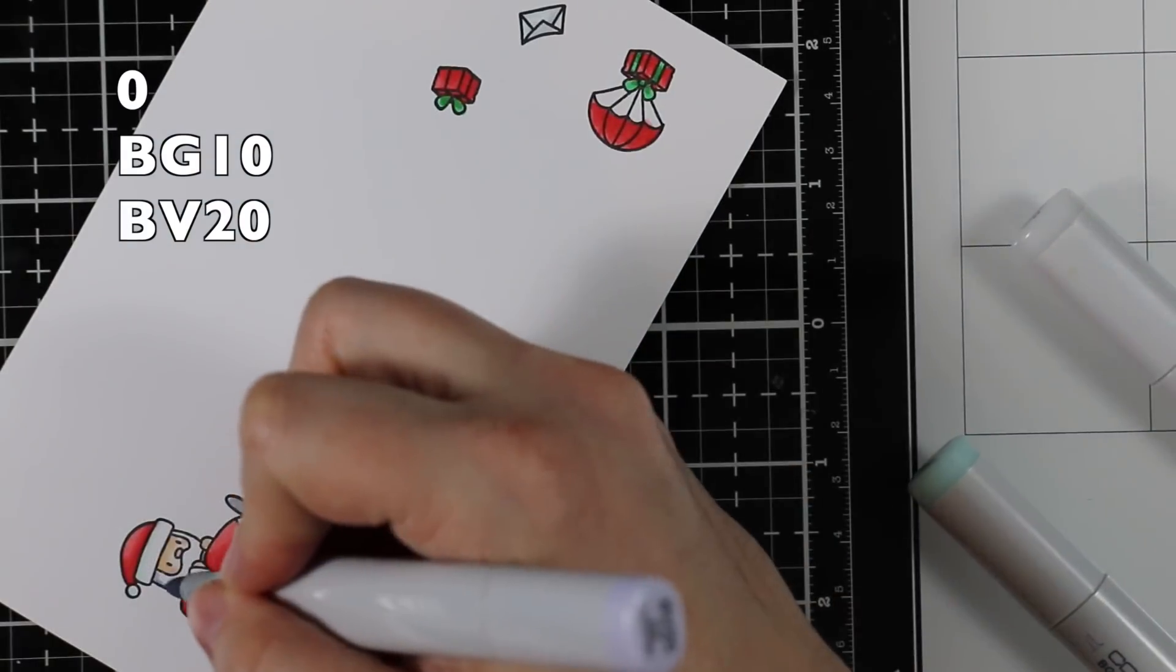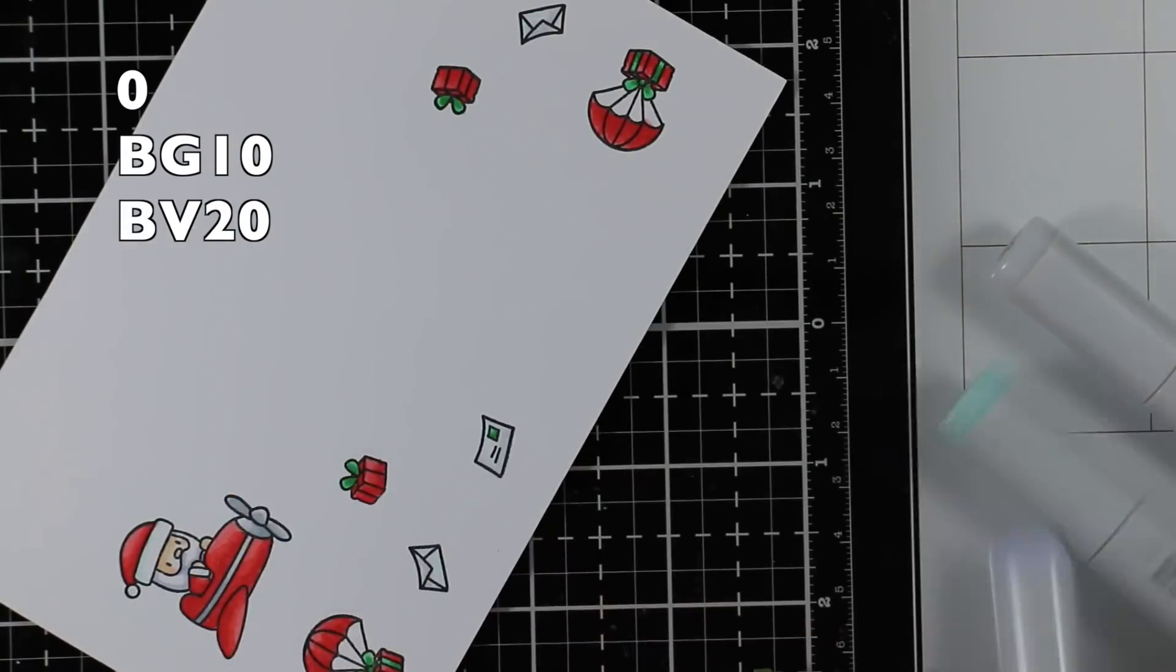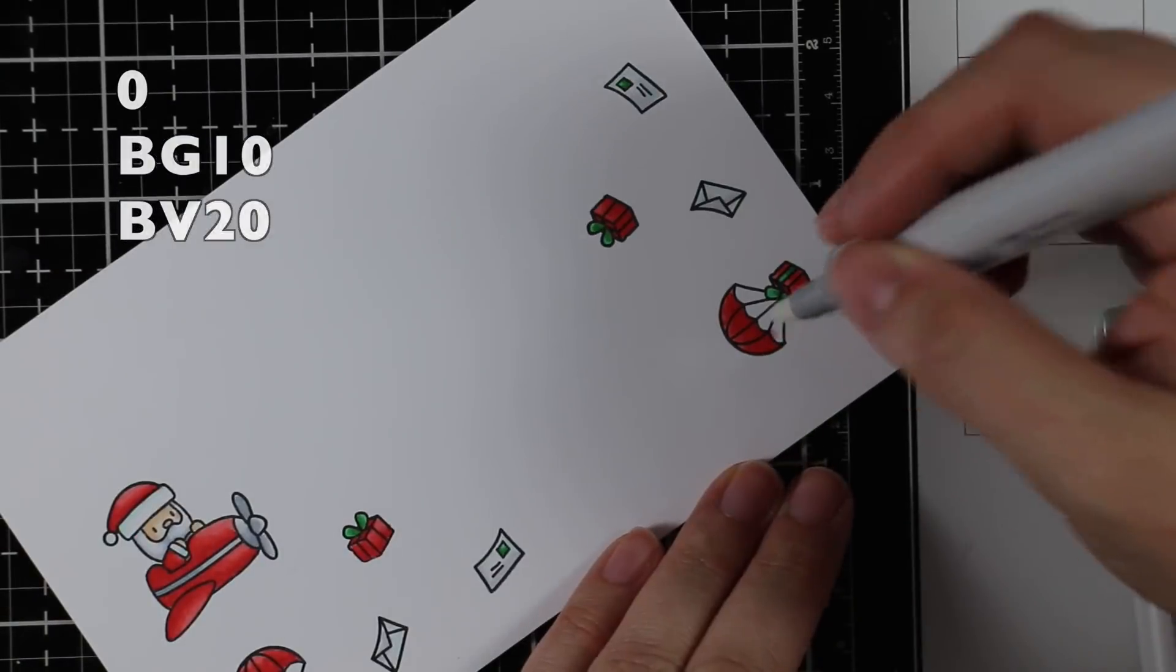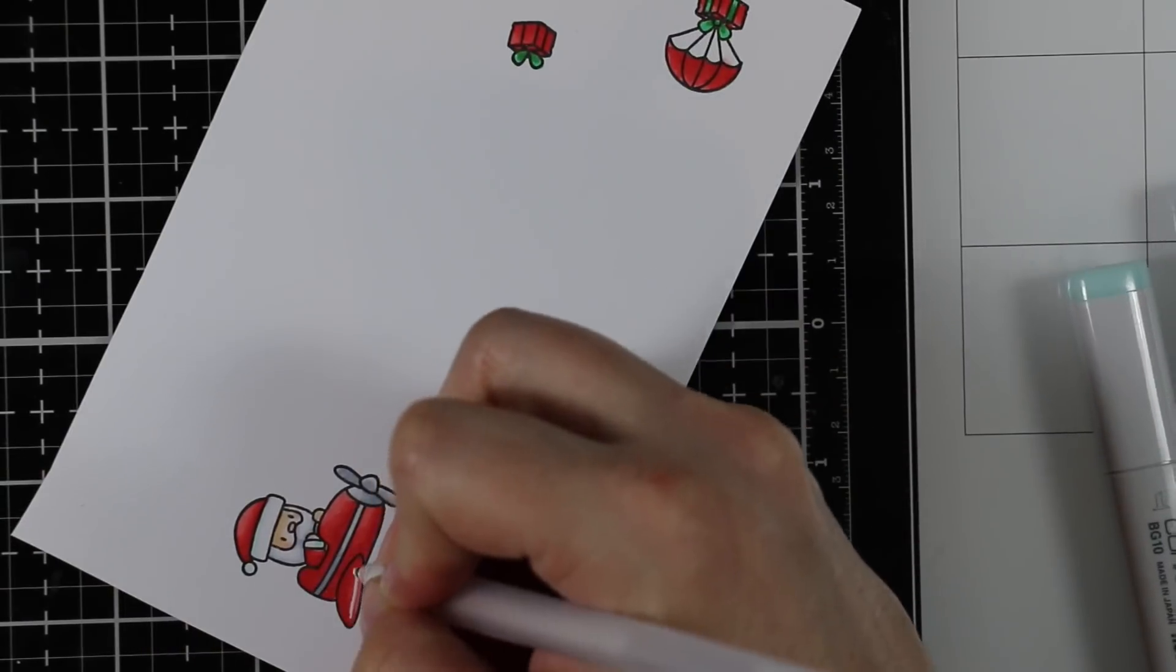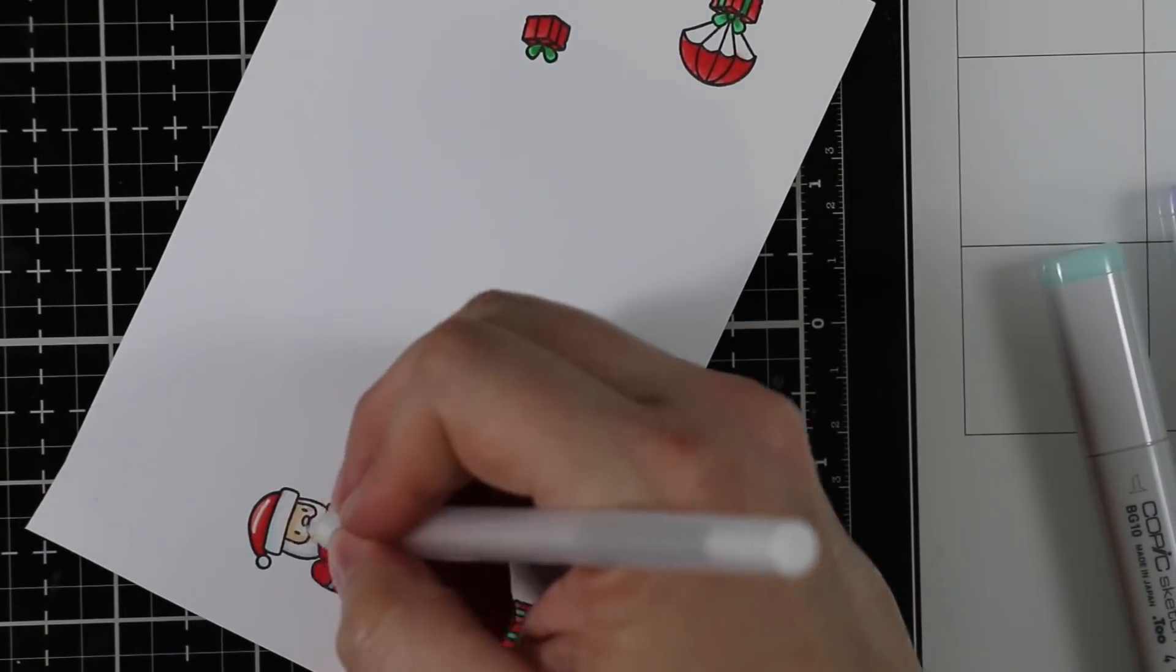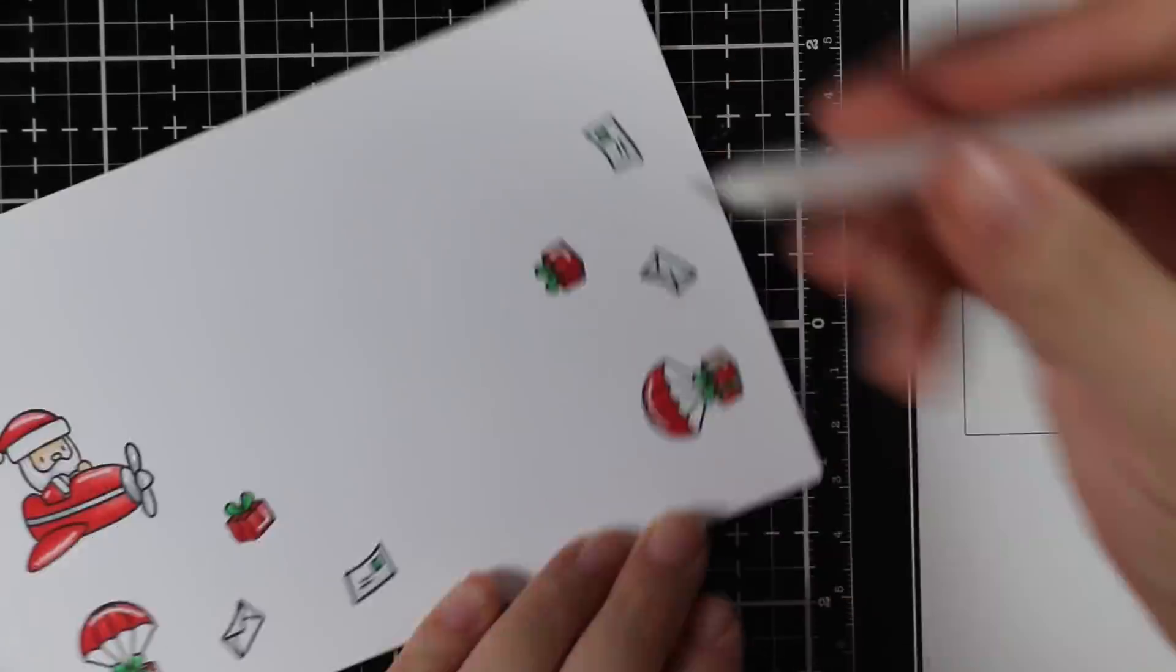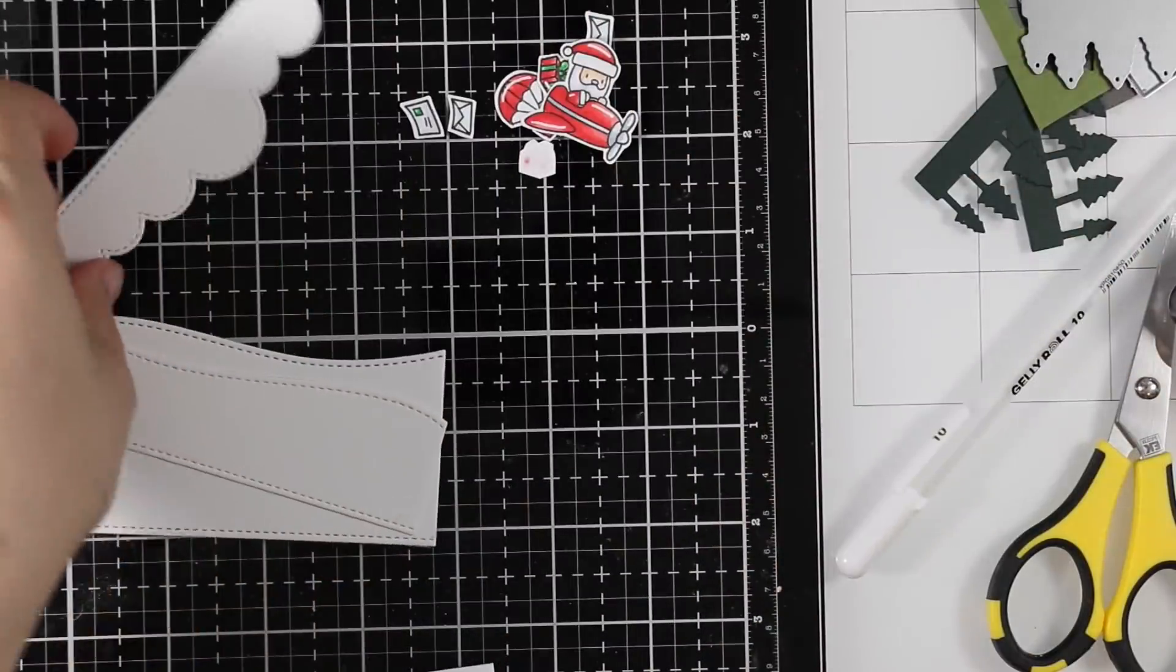I used BG10 on parts of Santa's outfit and on the envelopes, as well as a little bit of BV20 which I really like to add shading with. I used BV20 on his beard just to differentiate a bit. I added some highlights with my white gel pen just to make all the images pop.